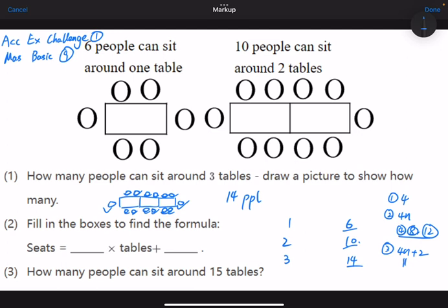The n is the number of tables. So it's four times the tables plus two, which makes sense.